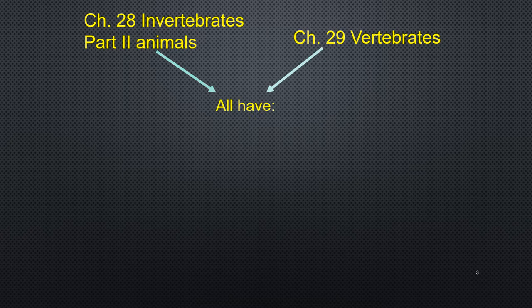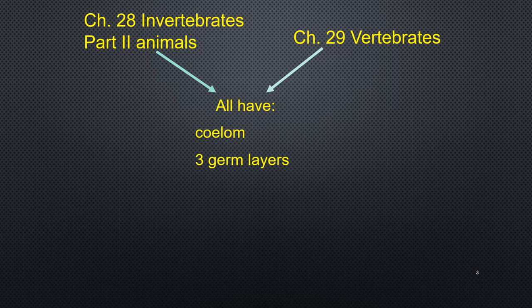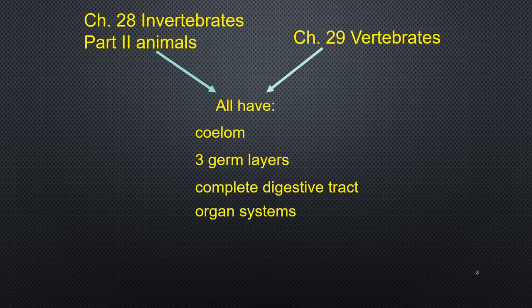We're just going to look at these features quickly because chapter 28 covers invertebrates and chapter 29 starts with vertebrates. What all these animals have in common: they have a coelom or a partial coelom, three germ layers — remember they were triploblastic — and the ones we're looking at today have a complete digestive tract, meaning they have a mouth and an anus. They also have organ systems, and all of these are ingestive heterotrophs.